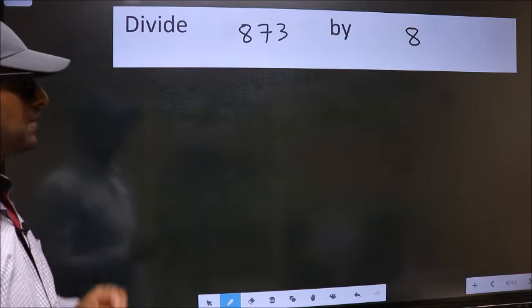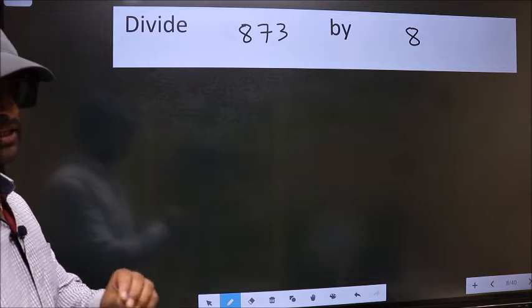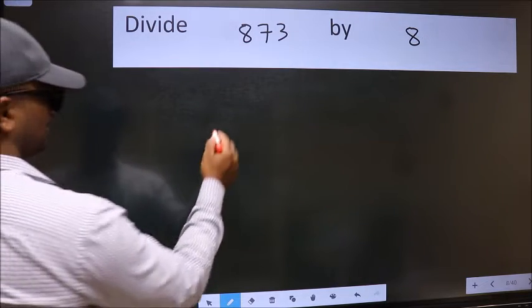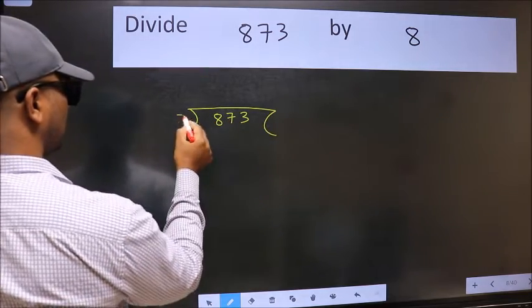Divide 873 by 8. To do this division, we should frame it in this way. 873 here and 8 here.